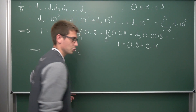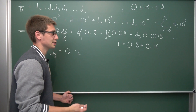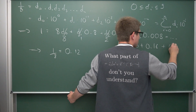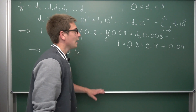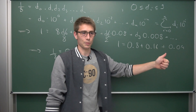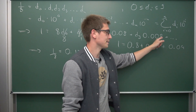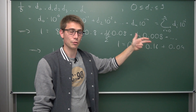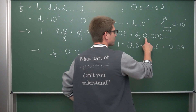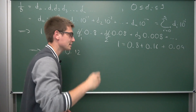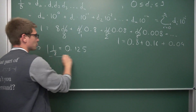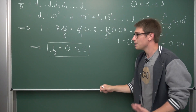Zero-point-eight plus zero-point-sixteen gives us 0.96. So what is still missing is 0.04. How often does 0.008 fit into 0.04? Eight, sixteen — one time, two times, three times, four times, five times. Five times 0.008 equals 0.04 — the last thing still missing. So our last digit d4 equals five and we are done. One-eighth equals 0.125, and you see this method is working.